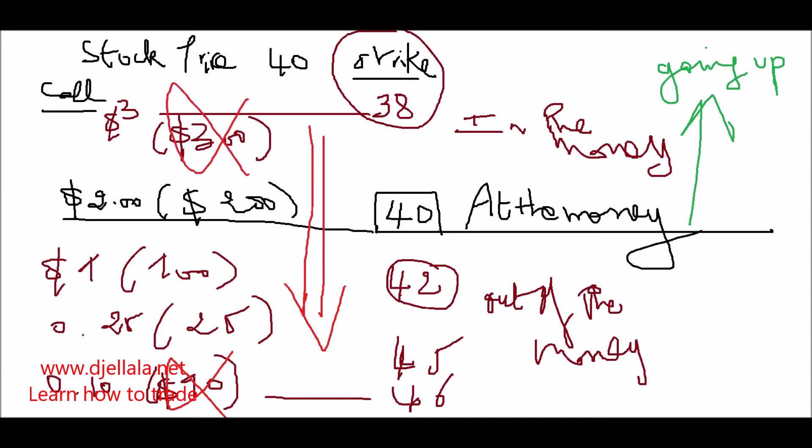This is very important to keep in mind: buying in the money does not mean you will make more money just because you paid more. It doesn't help that much. But if the market moves in your favor, a $0.10 option can go to $0.25, to $1, to $2, to $3 — if the stock goes from $40 to $46, $50, $55, $60. That's the way to buy cheaper.